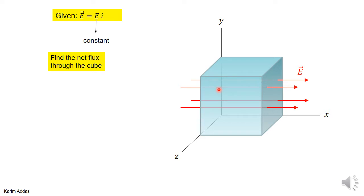Where is this electric field coming from? We don't care — it doesn't matter for us in the problem. The only thing is that we know there exists an electric field that's in the i direction, and it's uniform. There could be charges somewhere else, like a sheet of charge somewhere else. All we care about is that there's a region of empty space here with a uniform electric field pointing in the x direction, and we put a mathematical surface in the shape of a closed cube.